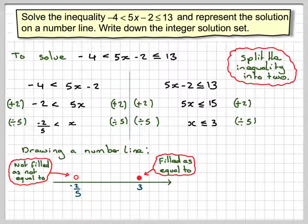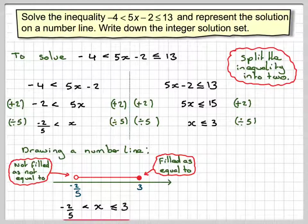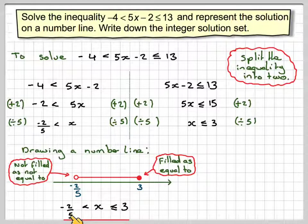Our values are greater than this, but less than this. So we draw a line in the middle here. And the solution will be x greater than minus 2 over 5, but less than or equal to 3.